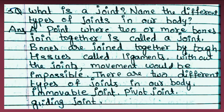Fifth question: What is a joint? Name the different types of joints in our body. Answer: A point where two or more bones join together is called a joint. Bones are joined together by tough tissues called ligaments. Without joints, movement would be impossible. There are different types of joints in our body: immovable joints, pivot joints, and gliding joints.